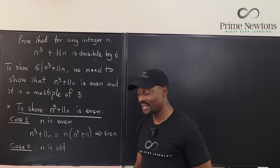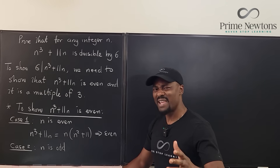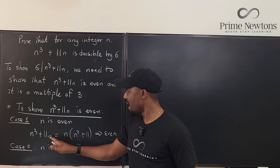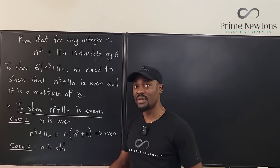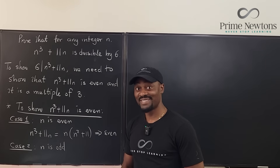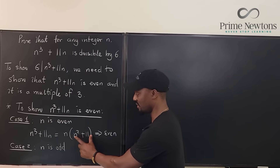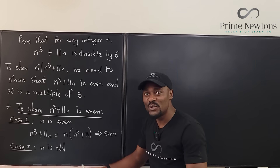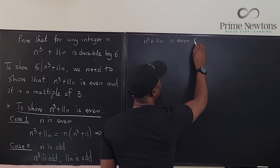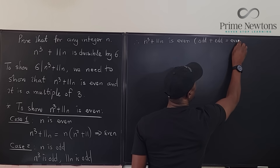Case two: n is odd. Going back to the original expression — if n is odd, then n cubed is odd, because if you keep multiplying an odd number by itself it will always be odd. And 11, which is odd, times an odd number is odd. The sum of two odd numbers is always even. So odd plus odd makes this even. Either way, this expression will always be divisible by two. The reason: odd plus odd equals even.